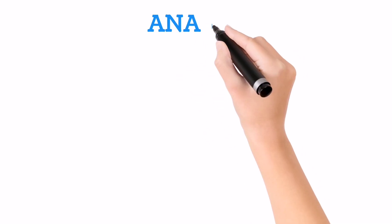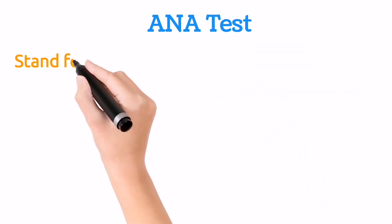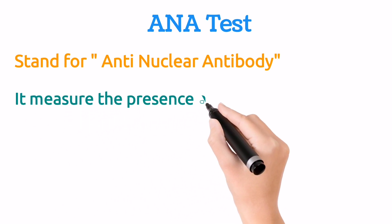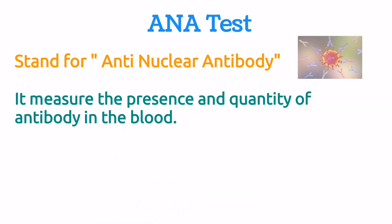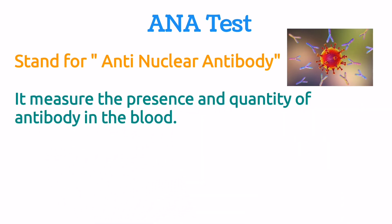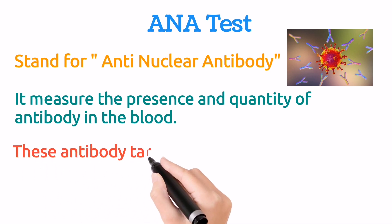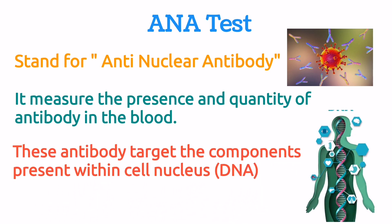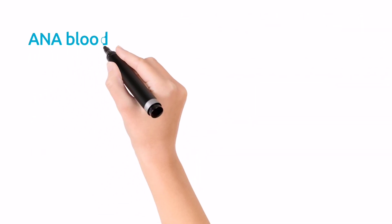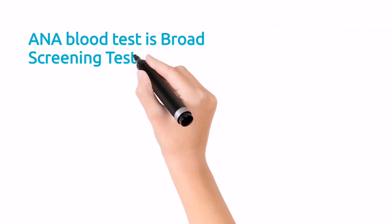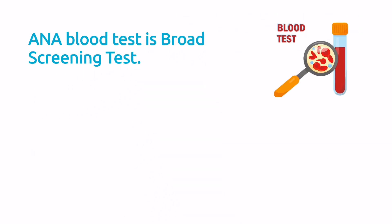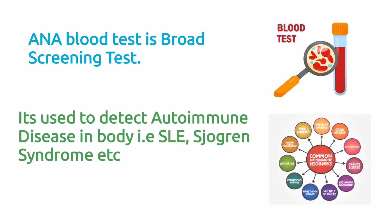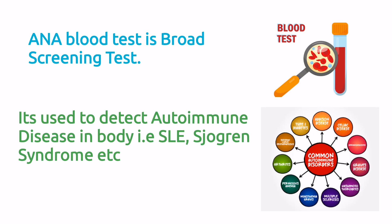First, what is ANA test? ANA stands for Anti-Nuclear Antibody test. This test measures the presence and quantity of antibodies in blood. These antibodies target the components present inside the nucleus, specifically the DNA. ANA test is a type of screening test that screens people with autoimmune diseases like Systemic Lupus Erythematosus and Sjogren's syndrome.